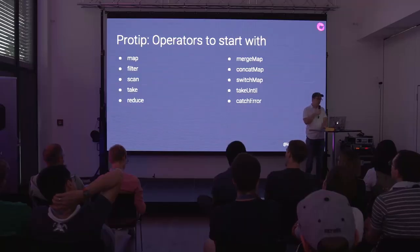Merge map, concat map, and switch map are all flattening operators. Take until is interesting — you can use an observable to tell another observable when to stop. And there's catch error, which deals with error handling and mapping to a different observable if you get an error.